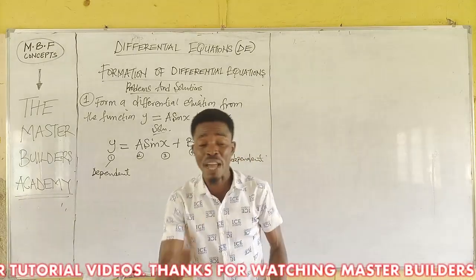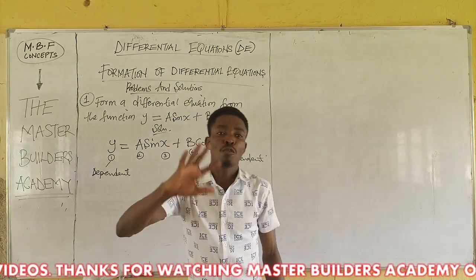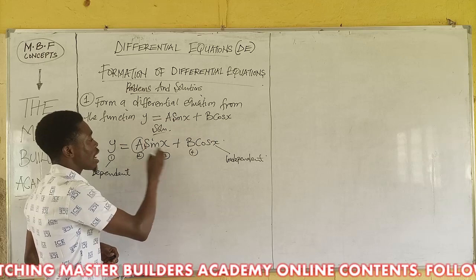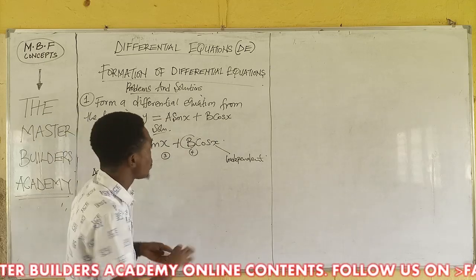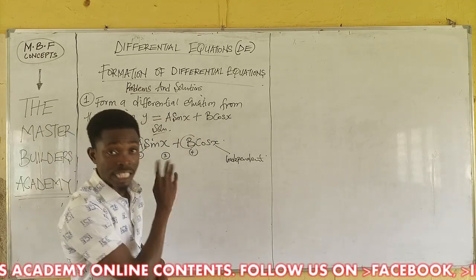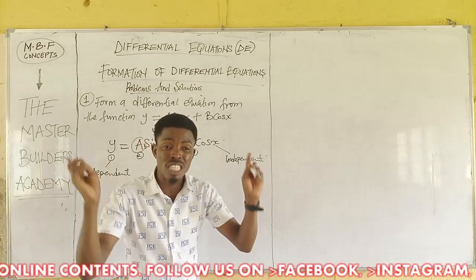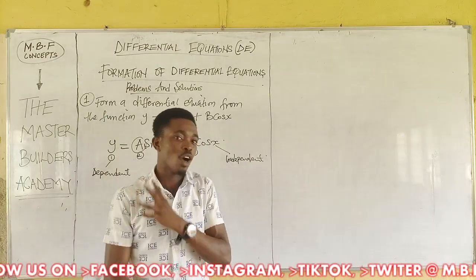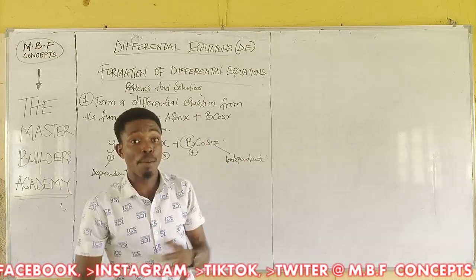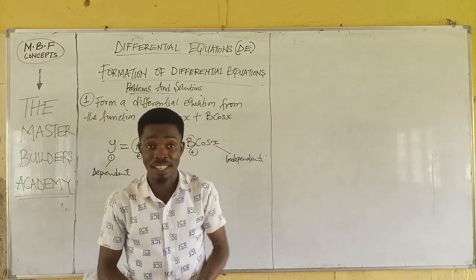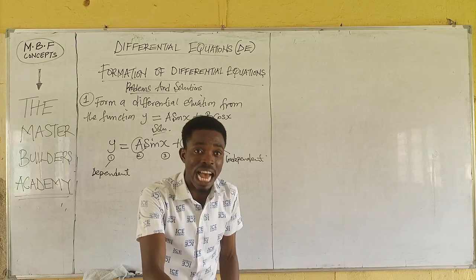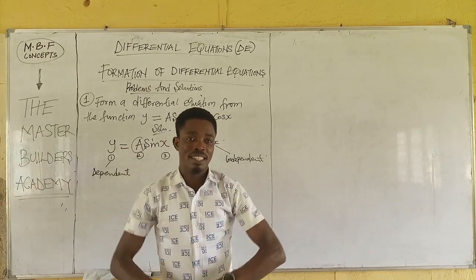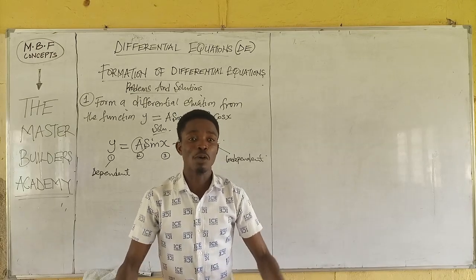For you to find the differential equation, A and B must be nowhere in the final result — you must successfully eliminate them. The only way to eliminate A and B, which are the arbitrary constants, is to differentiate. Every time you differentiate, you make one of them the subject of the formula.